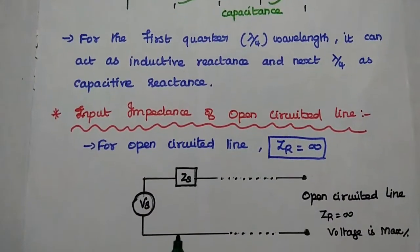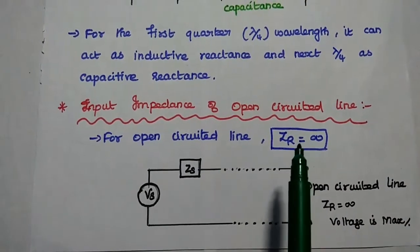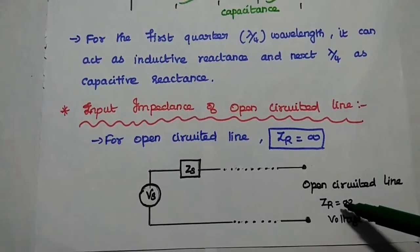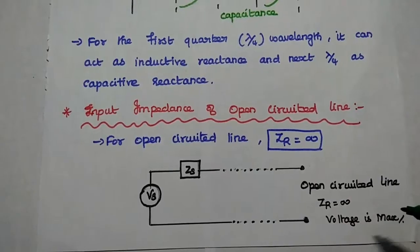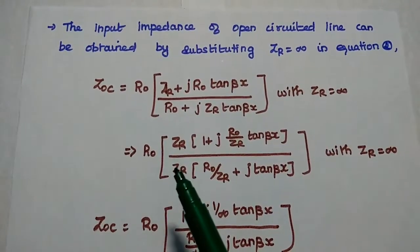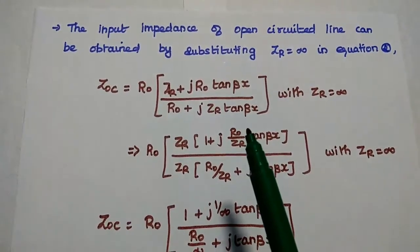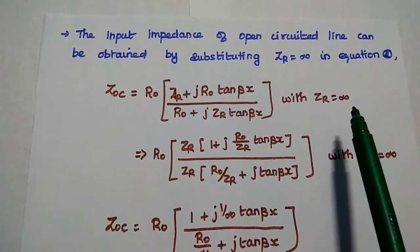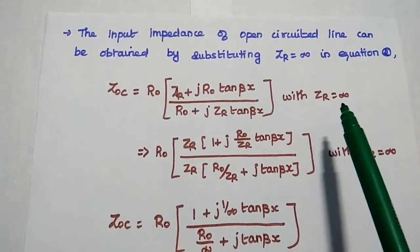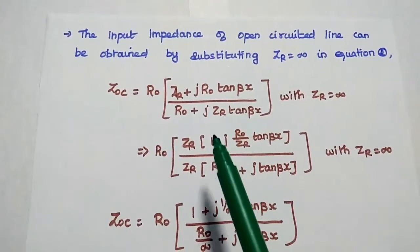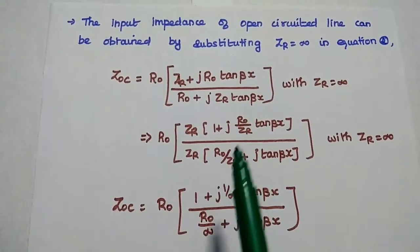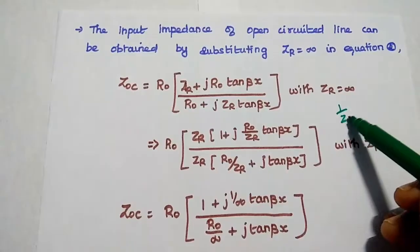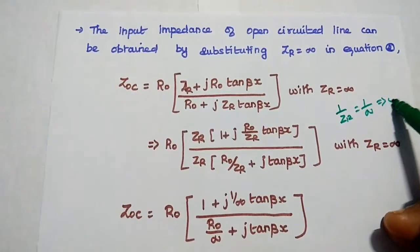Next we are going to derive the input impedance of the open circuited line. For open circuited line, the receiving end impedance becomes infinite. If it is open circuited, the voltage is maximum and current is minimum. The input impedance of the open circuited line can be obtained by substituting Zr as infinite in the second equation. We cannot substitute Zr as infinite directly, as the whole term would become infinite. So we take Zr as a common factor outside, giving 1 by Zr terms which become 0 when Zr is infinite.